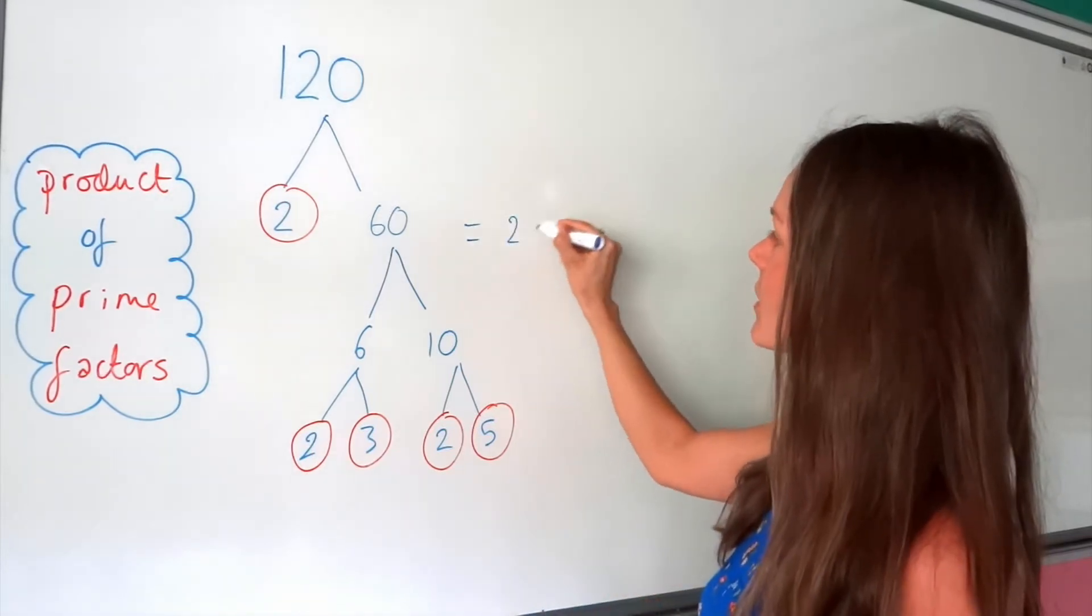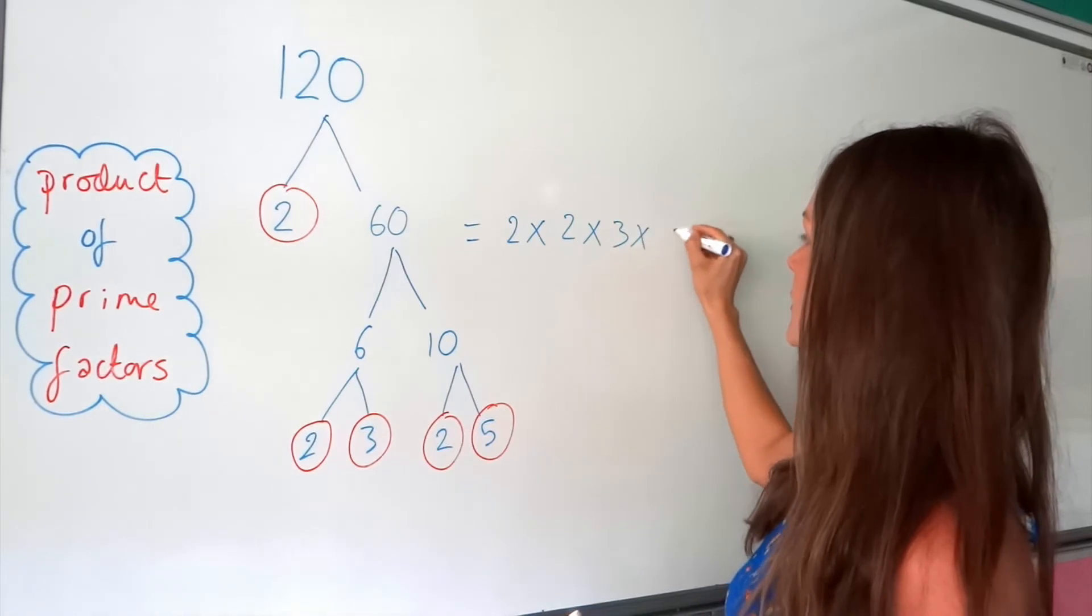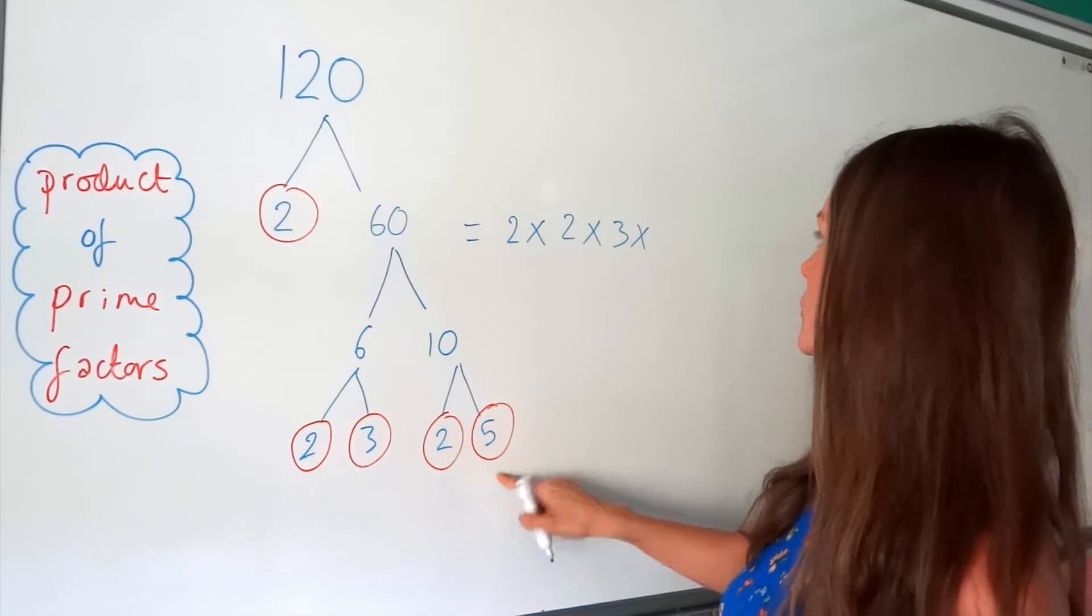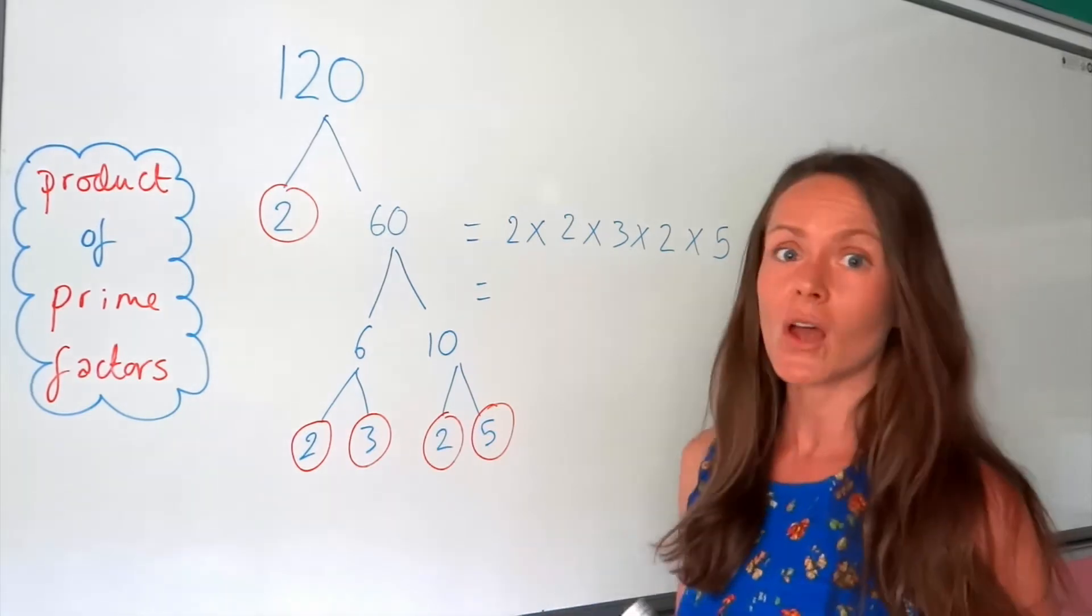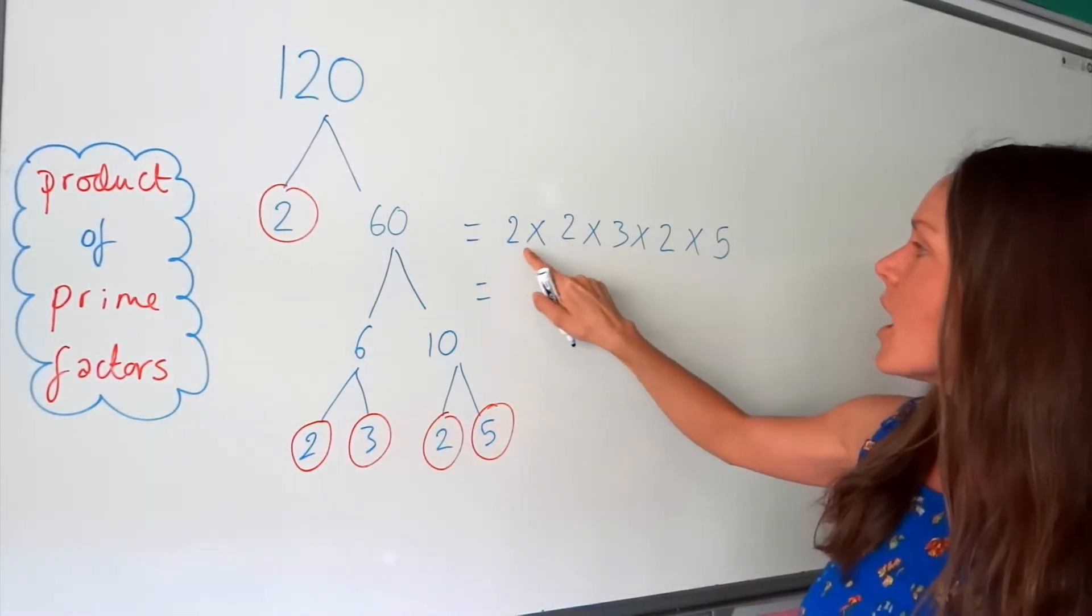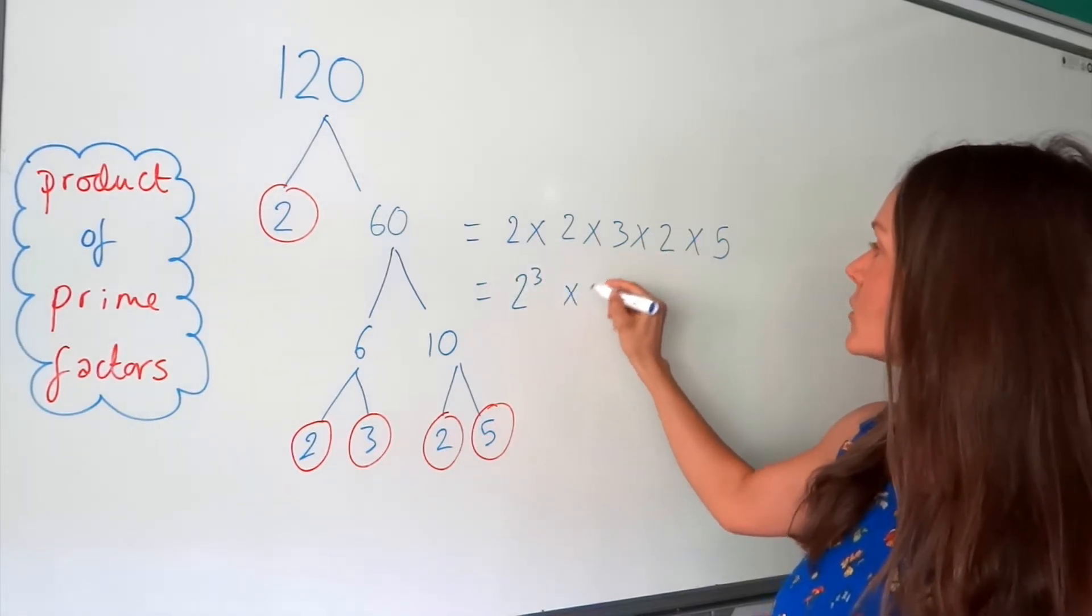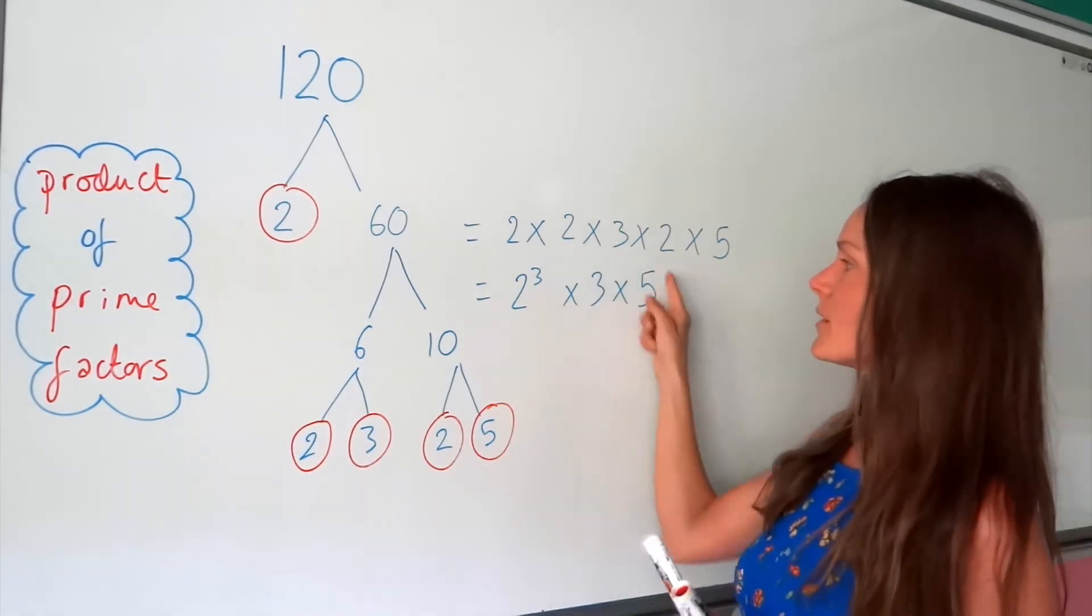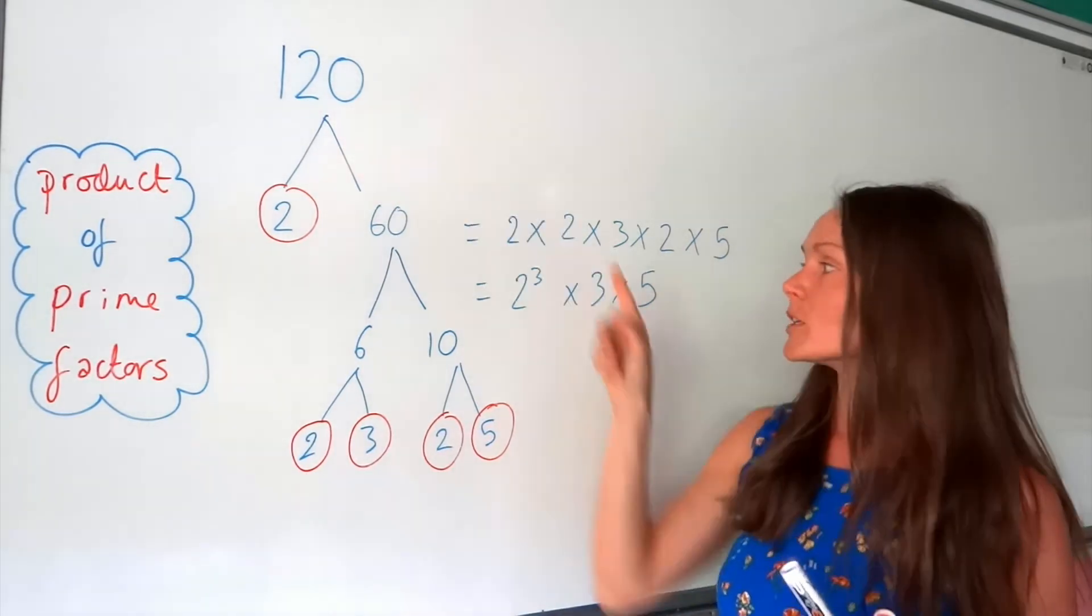So product just means write those numbers out again, but times them all together. So we've got 2 times 2 times 3 times 2 times 5. So they're my prime factors. I could tidy that up a little bit, because the number 2 is featured more than once. I've got 2 times 2 times 2, which is the same as 2 cubed. So I could write it like that as well. So if I multiply those numbers together, it should give me 120, which it does.